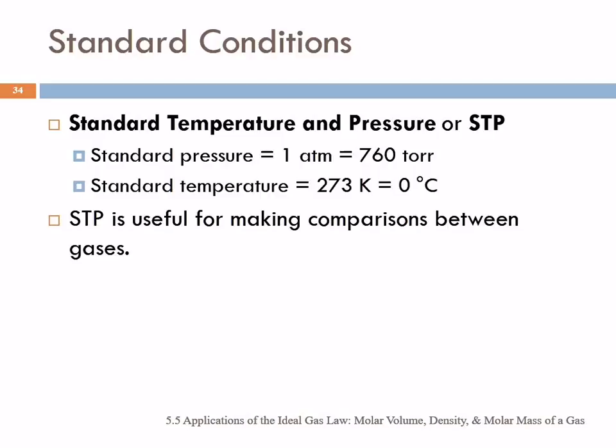And if you want it to be at standard pressure, you attach a manometer and you adjust it so that the levels are equal and you've got 1 atmosphere of pressure. So we call this standard temperature and pressure. It's abbreviated STP. And it's useful for making comparisons between different gases.